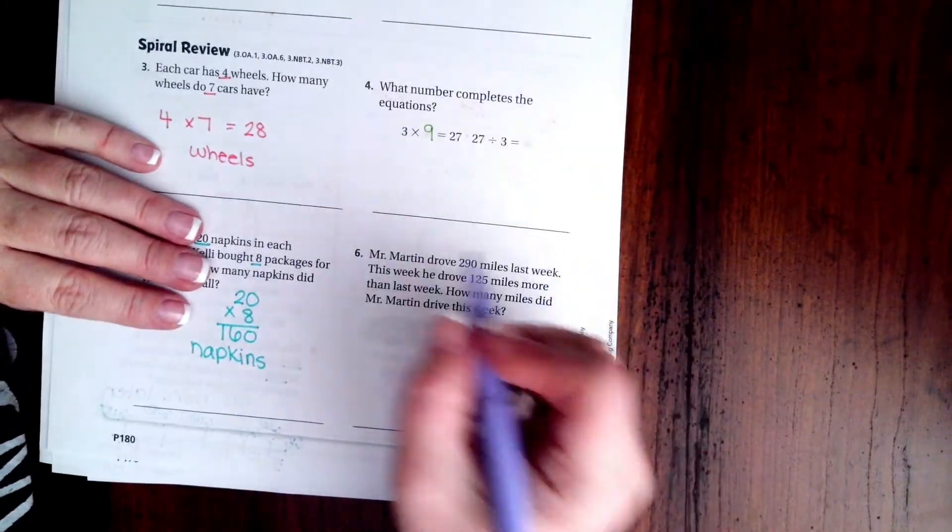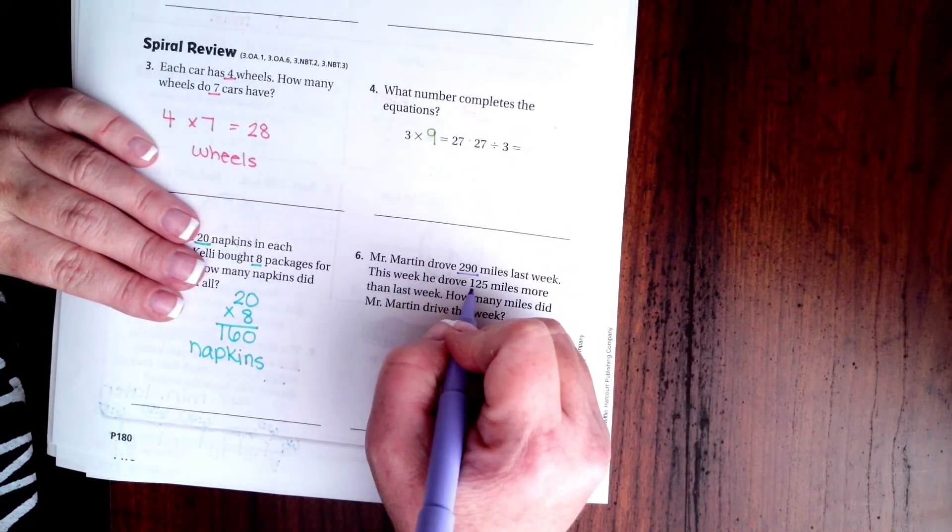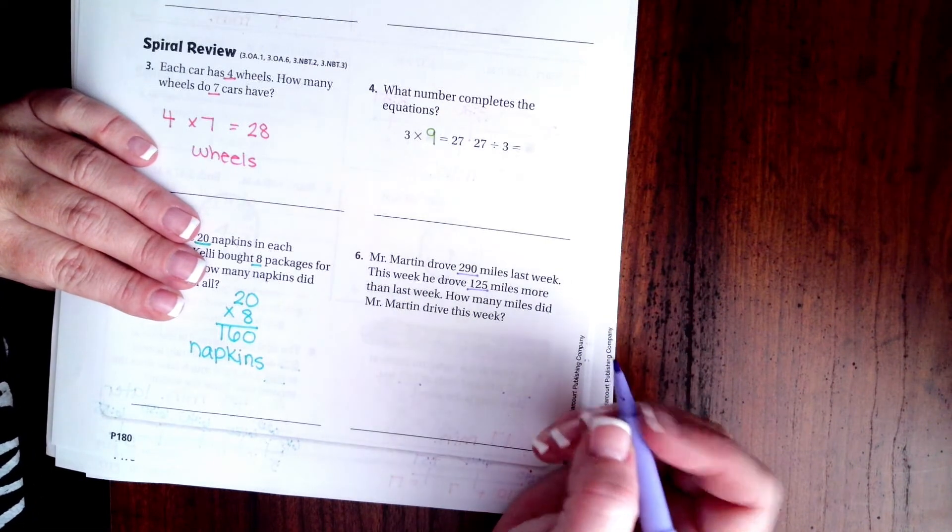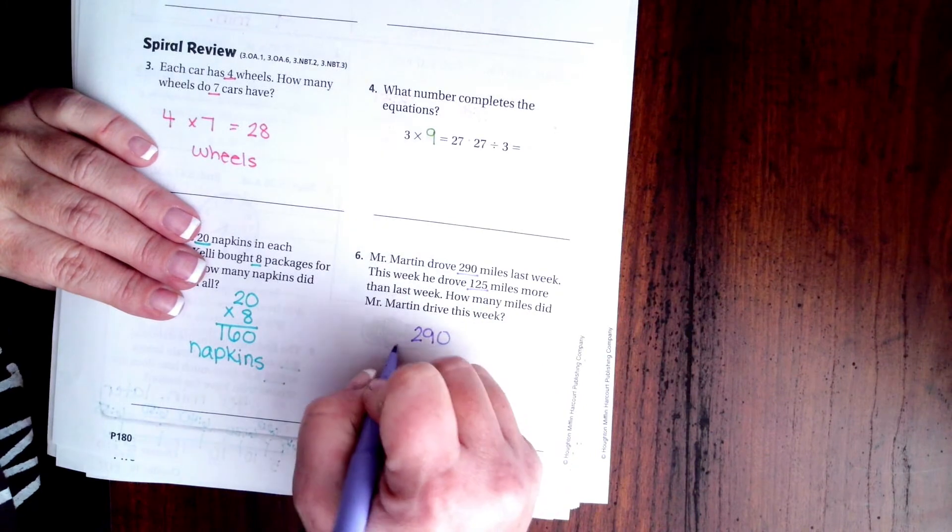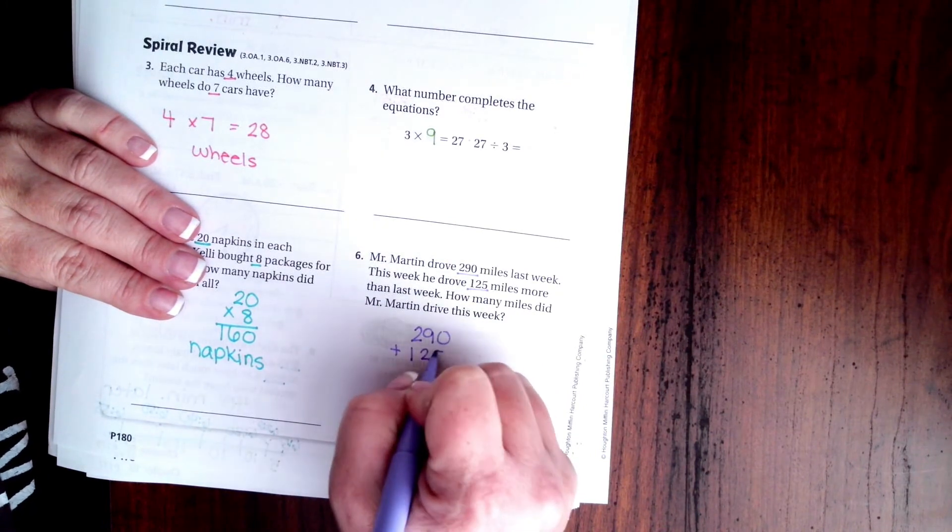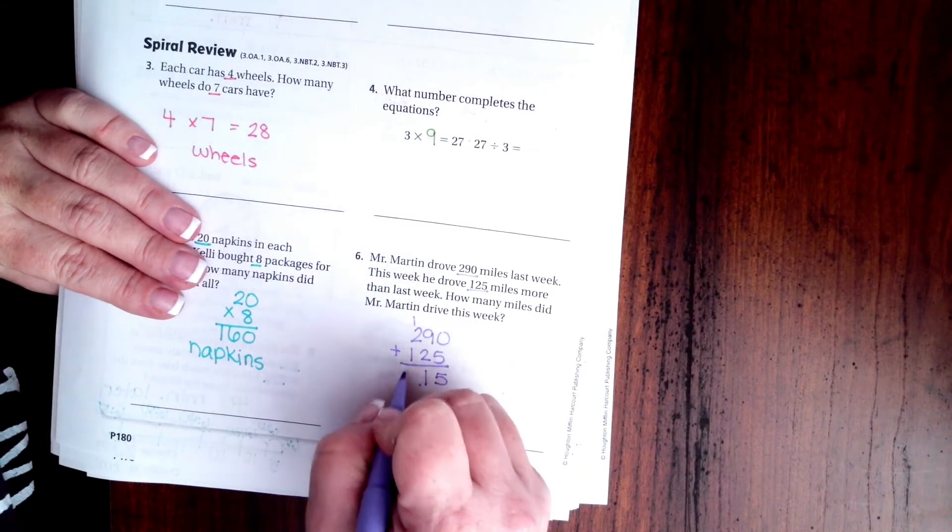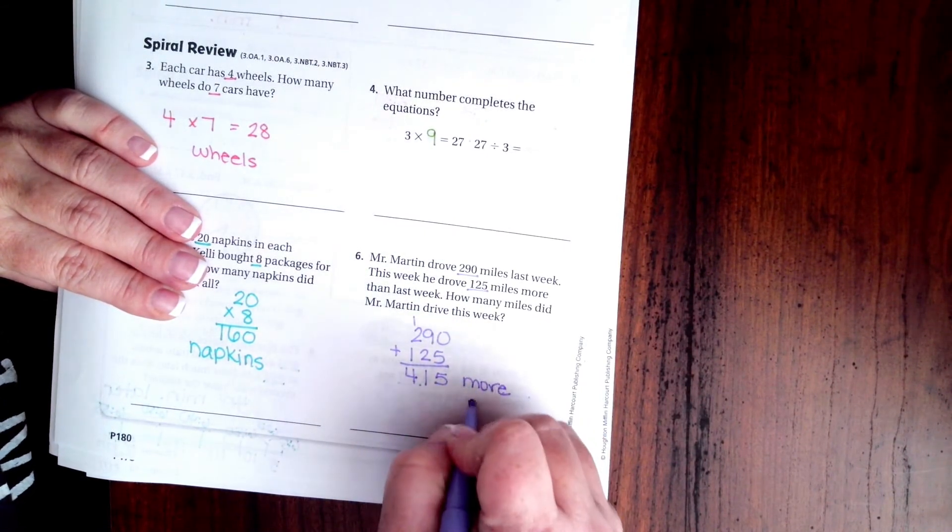All right, Mr. Martin drove 290 miles last week. This week he drove 120 miles more than last week. How many miles did Mr. Martin drive this week? So I'm going to take the 290 and I'm going to add to it 125. So we have 5, 11, carry the 1, 415 more miles.